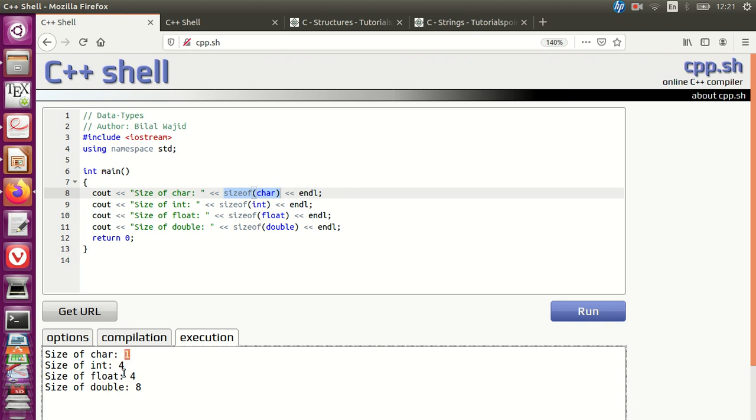It tells you how many bytes the memory is using to store these data types. You can see for double it's 8, for float and integer it's 4, and for character is 1.